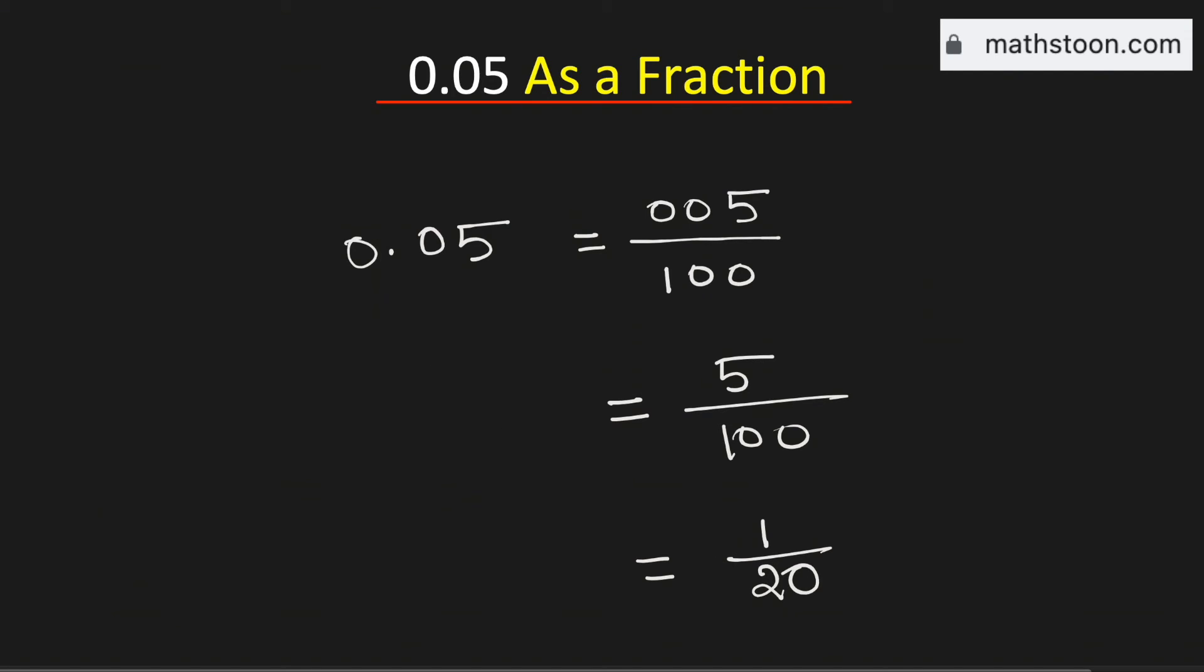So we say that 0.05 as a fraction is the same as 1 over 20, and this is our final answer.